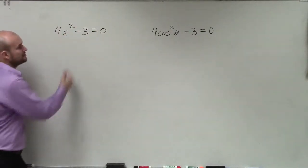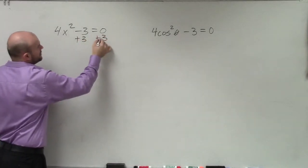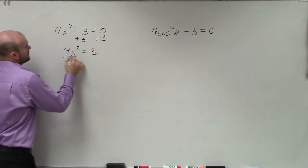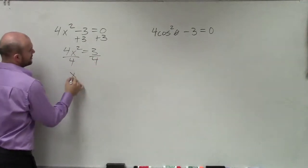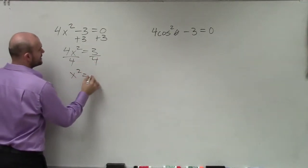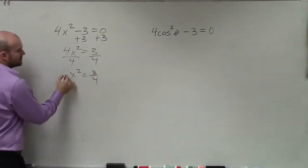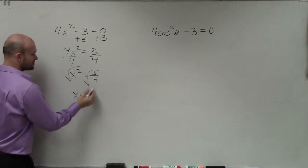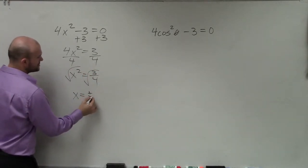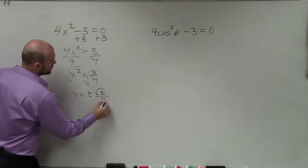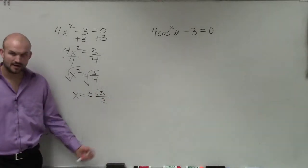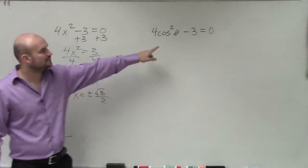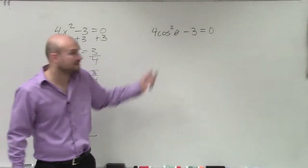So how would you solve this? You'd use your inverse operations. You'd add 3, then you get 4x squared equals 3, divide by 4, and x squared equals 3 over 4. Then you take the square root, and you have x equals plus or minus the square root of 3 over 2. Guys, it's the exact same thing with the cosine of theta.